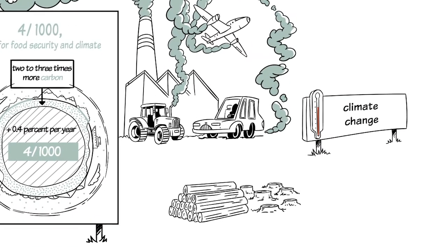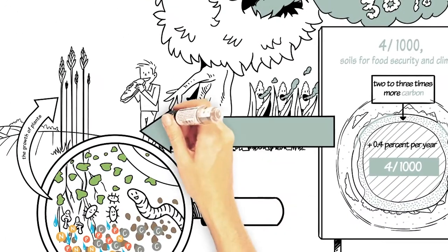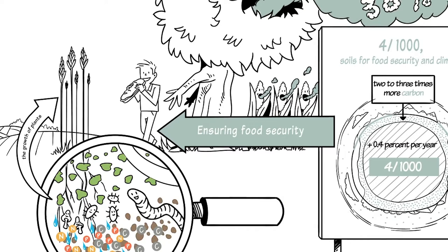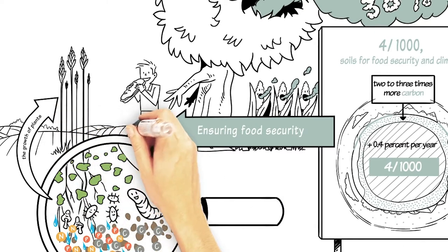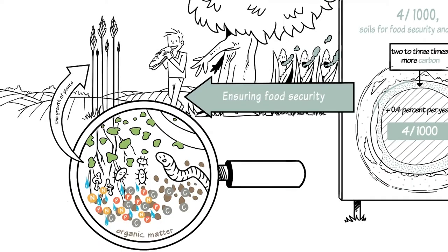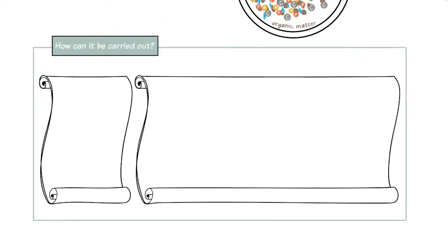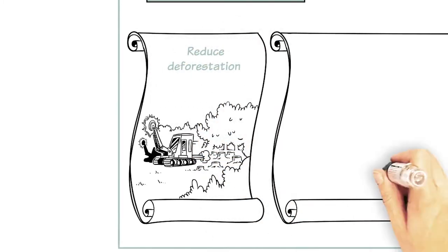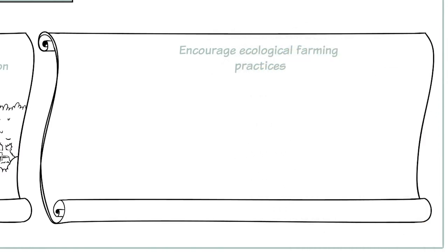Increasing the storage of carbon by 0.4 percent per year — four parts per thousand — in the top 30 to 40 centimeters of soil could stop the increase of CO₂ in the atmosphere. This is the proposal of the Four Parts Per Thousand initiative. The increase in carbon storage in soils would therefore contribute not only to stabilizing the climate, but also to ensuring food security — that is, the supply of sufficient food for all people.